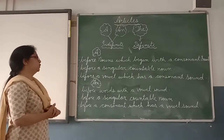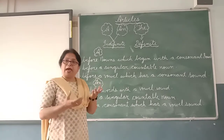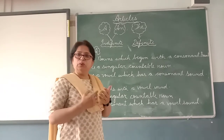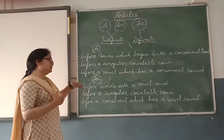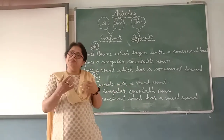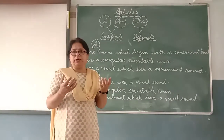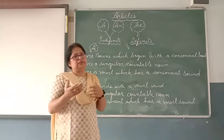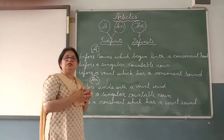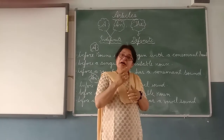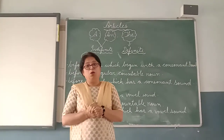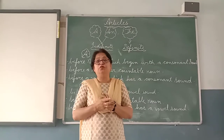Now the usage of the article An: it is used before words with a vowel sound — an egg, an apple, an umbrella. The word begins with a vowel sound. It is also used before a singular countable noun. An egg is singular in number and countable; an umbrella is singular in number and countable. It is also used before a consonant which has a vowel sound — for example, 'honesty'. It starts with the consonant H, but H is silent, so we say 'an honest' person because the vowel sound is there.